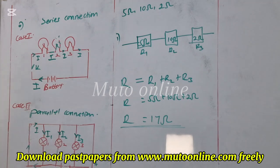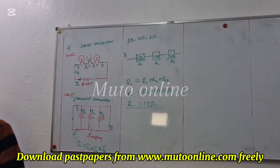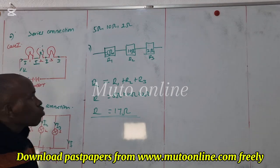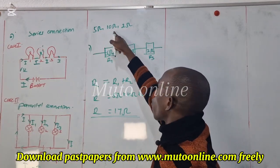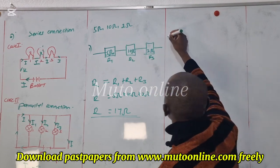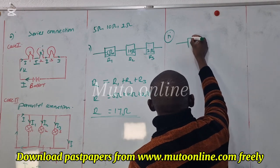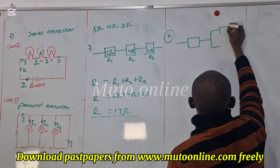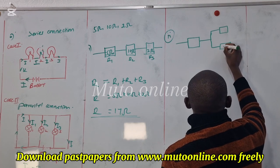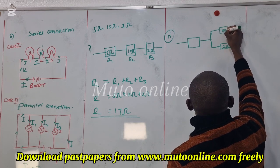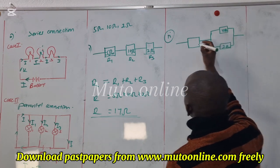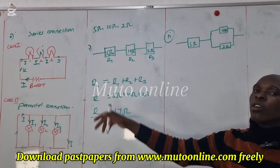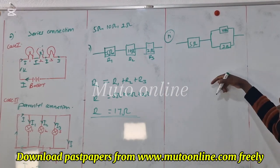The last part: determine the effective resistance when the 5 ohm resistor is in series with the parallel connection of 10 ohms and 2 ohms. So we consider 5 to be in series with a parallel connection of 10 and 2. We have 5 ohms in series, with a parallel connection of the 10 ohm resistor and the 2 ohm resistor — for them, they are in parallel.